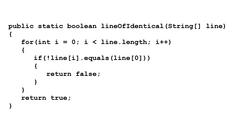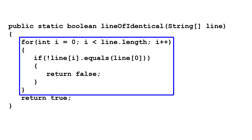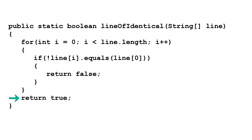Part A solution — LineOfIdentical. This for loop traverses the entire array of string. It compares each value in each index to the contents of index 0. Since we are comparing strings, we use the equals method. We are looking for an index that is not equal to index 0, but because there is no not-equals method in the String class, we use the equals method and then reverse the value with the not symbol. As soon as we find a string that is different from index 0, we immediately return false. If we make it through the entire for loop without finding a non-matching string, we return true because we've proved that all strings in the array are identical.